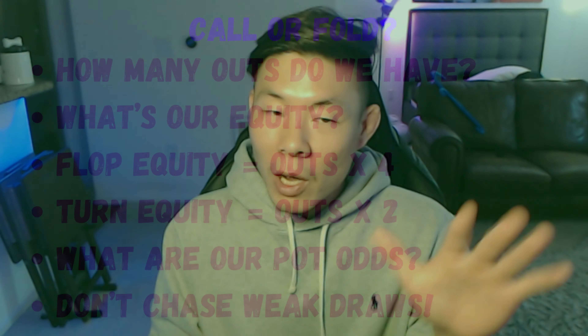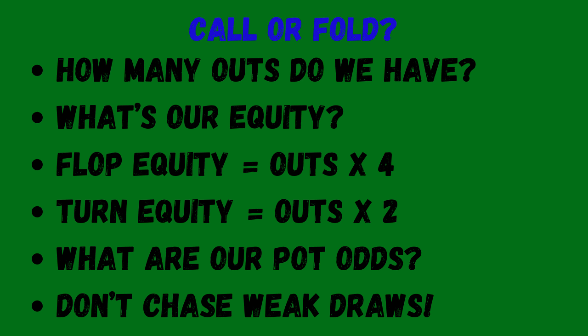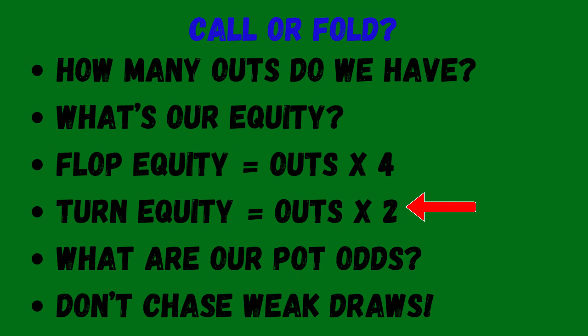This is pretty basic, so I won't cover it too much. But first thing is we want to calculate how many outs we have. And if we're on the flop, everyone knows you multiply that by 4, and if we're on the turn, we multiply that by 2. So if we have a potential of 12 outs on the flop, then we multiply it by 4 and we get 48% equity. And if we're on the turn and we only have 8 possible outs, then we multiply that by 2 and we get 16% equity, which is very, very low. We're going to rarely have odds to call, unless that pot is massive.